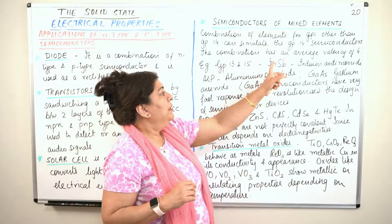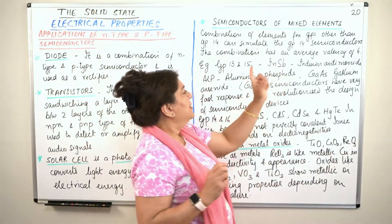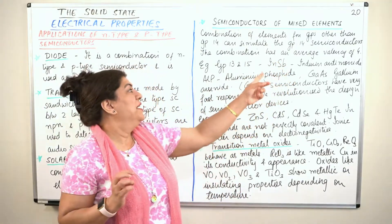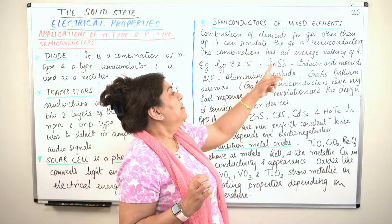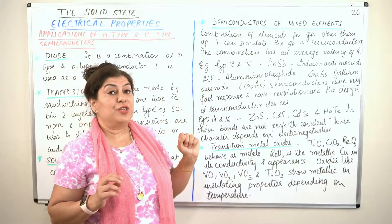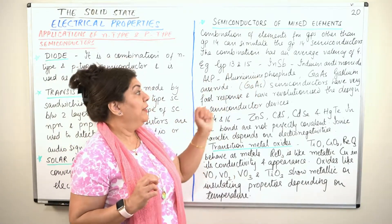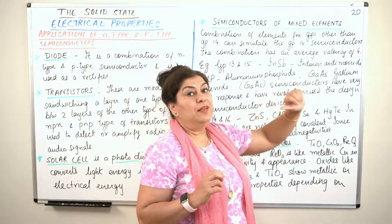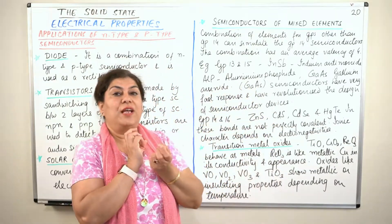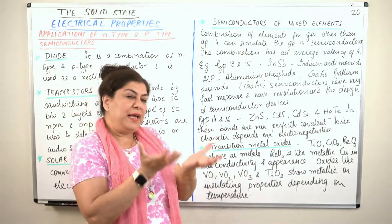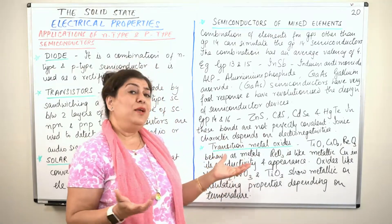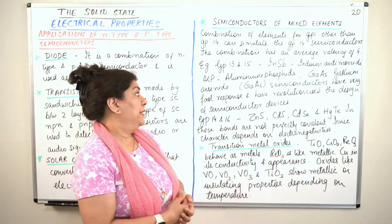For example, group 13 and 15 could be combined: indium antimonide (InSb), aluminum phosphide (AlP), and gallium arsenide (GaAs) — gallium is group 13, arsenic is group 15. These combinations, when you take equal numbers of atoms of both, have an average valency of four and can simulate the 14th group semiconductors.